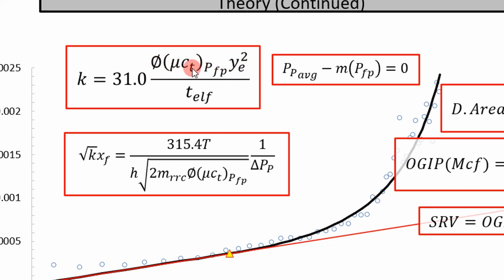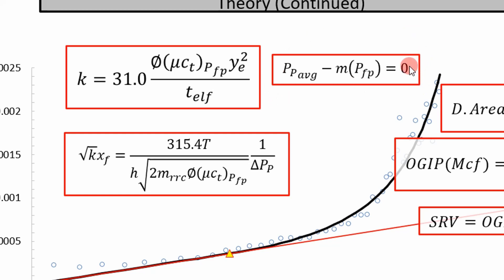And then these fluid properties — because we're doing this for a natural gas well — the author calculates these fluid properties at the average fracture pseudo pressure. In order to obtain that, you have to solve this equation right here. Without going into too much detail, you have to apply a numerical method to do this. In this case, I apply the false position method, and we'll go into that later.